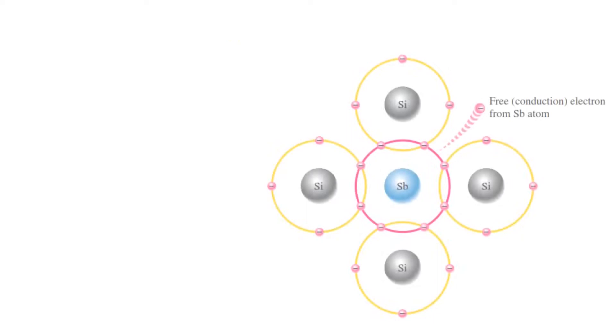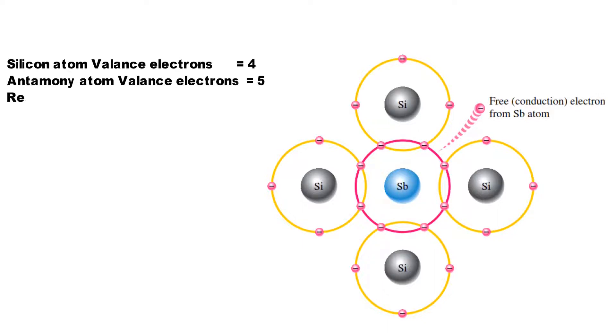Four of the antimony atom's valence electrons are used to form the covalent bonds with silicon atoms, leaving one extra electron. This extra electron becomes a conduction electron because it is not involved in bonding.